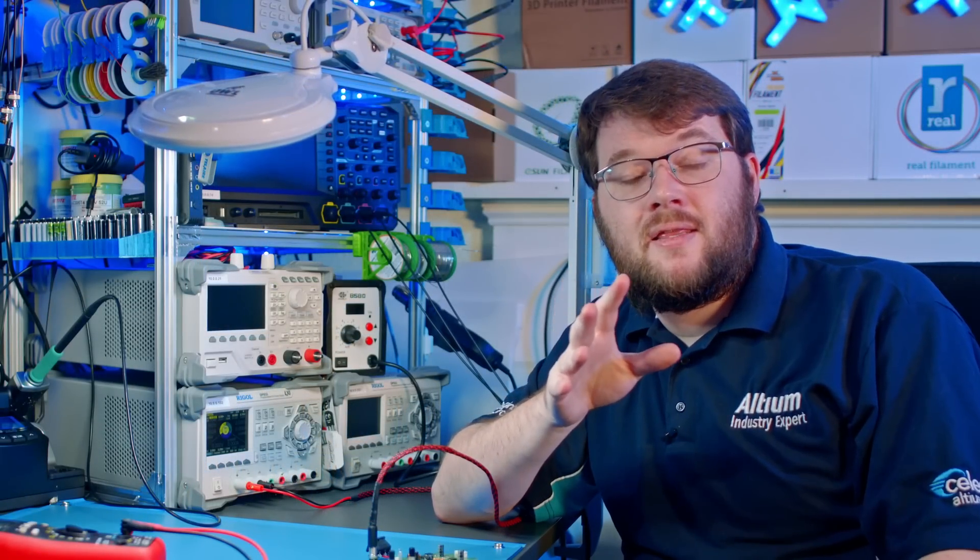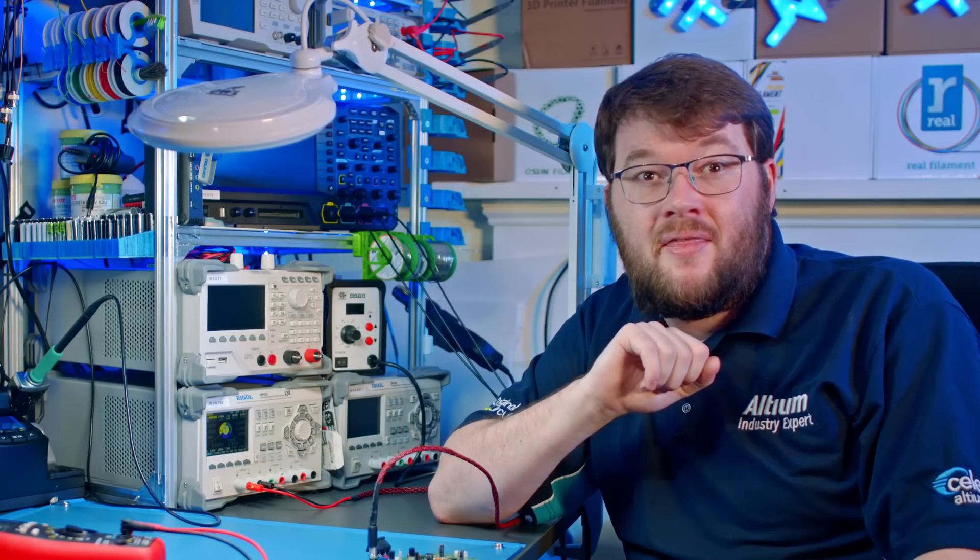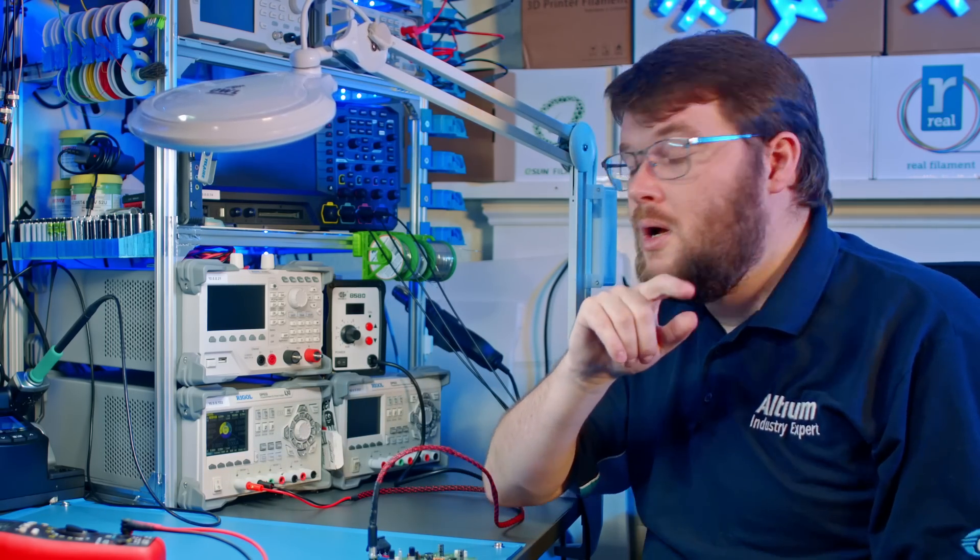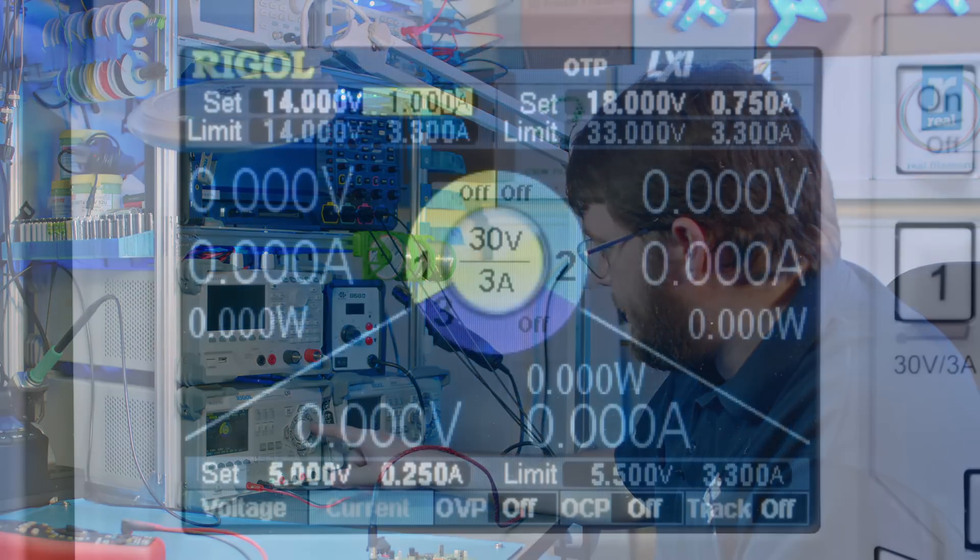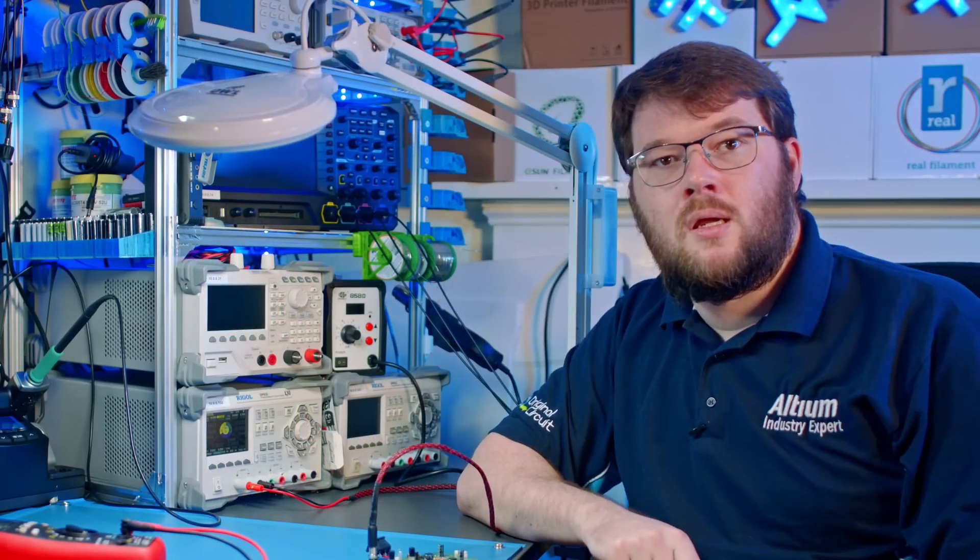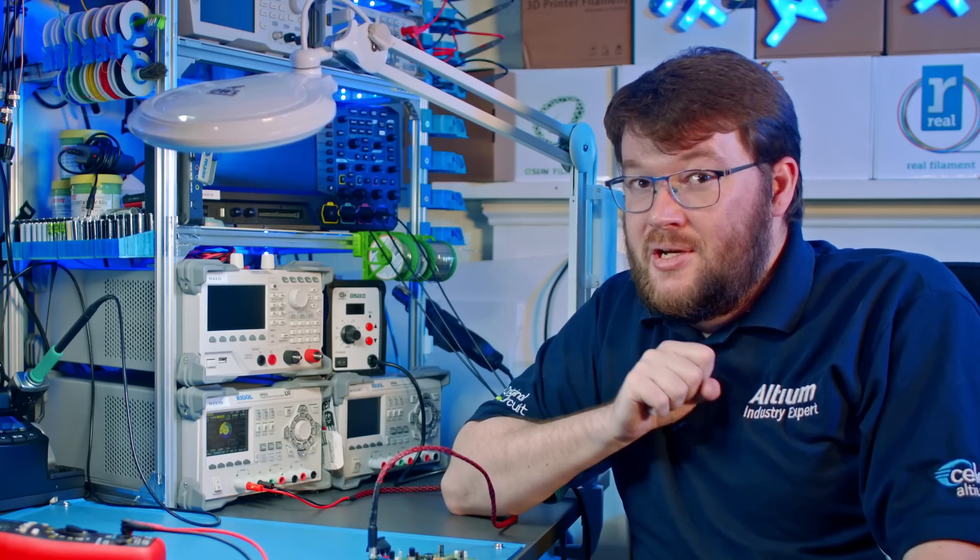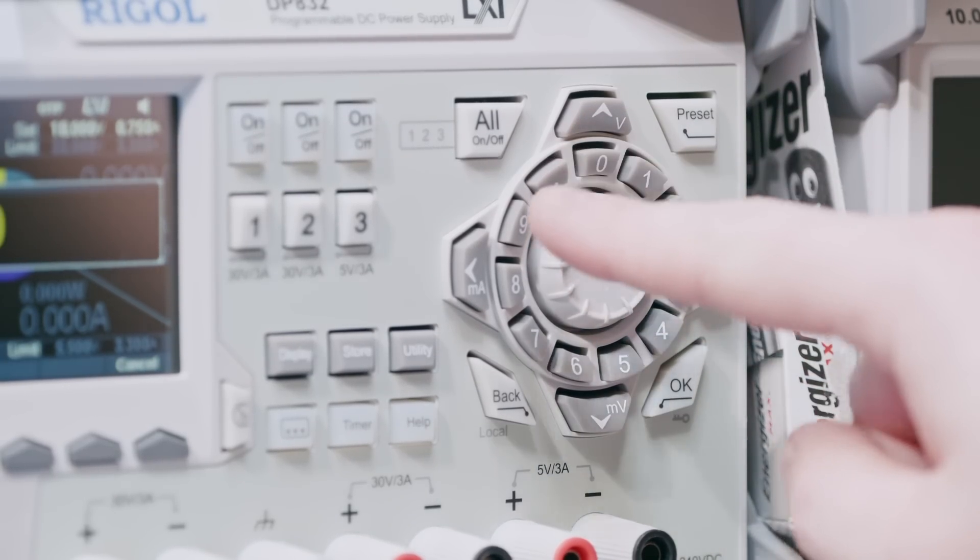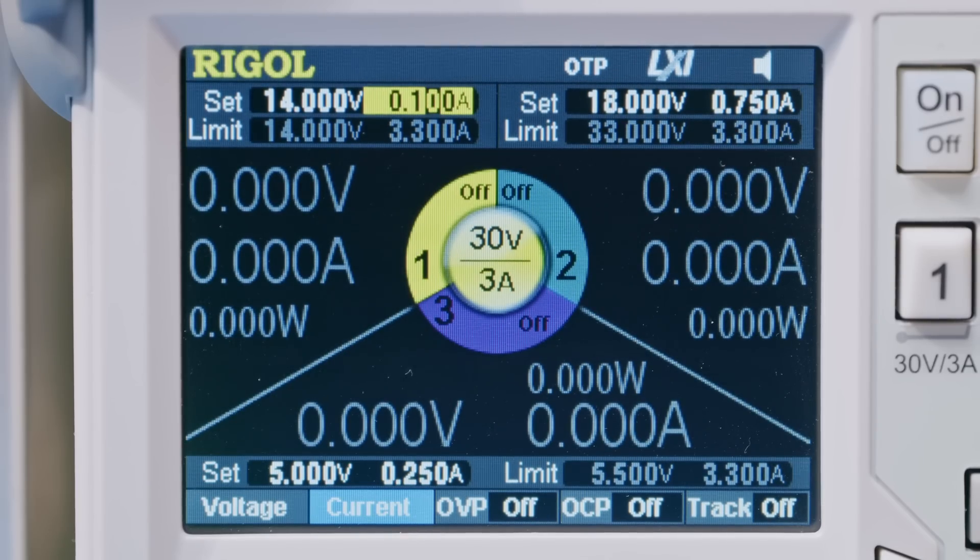Set the current limit to about 30% higher than a rough estimate of the current draw of the circuit, remembering to include LEDs. An unprogrammed microcontroller's outputs will typically be high and might turn on every LED on your board. A safe starting value for many boards is around 50 to 100 milliamps, though it will depend on your schematic.